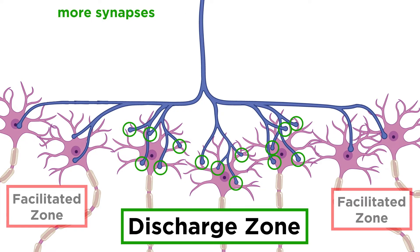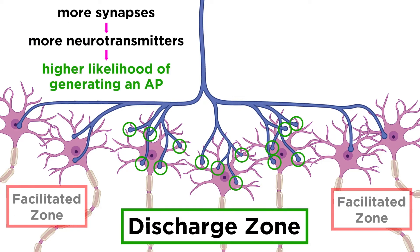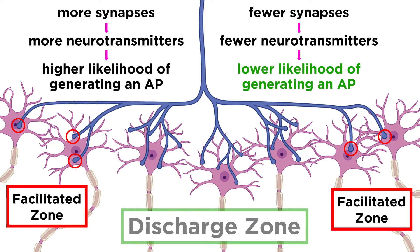The neurons in the discharge zone are on the receiving end of more synaptic contacts, and thus many more neurotransmitter molecules. Therefore, these neurons are more likely to depolarize beyond the threshold required for an action potential to be generated. The neurons in the facilitated zone will depolarize to an extent, but are less likely to reach that threshold unless such stimuli are also received from somewhere else.